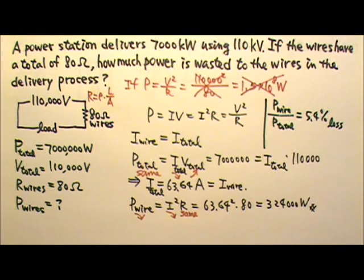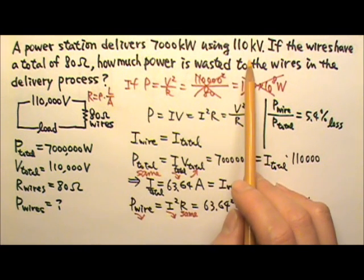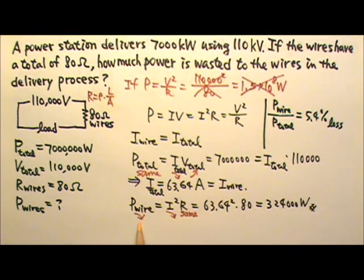If you remember, in the 8th Circuits lesson, we talked about power companies using high voltages to transmit electricity in order to reduce power loss to the miles and miles long of transmission wires.